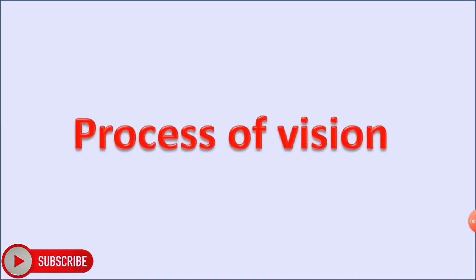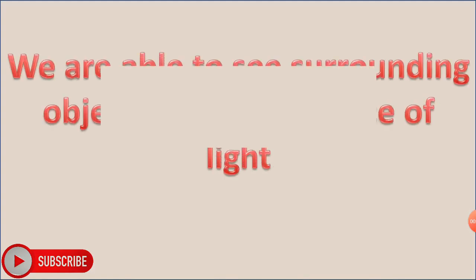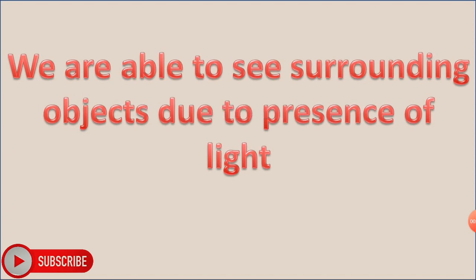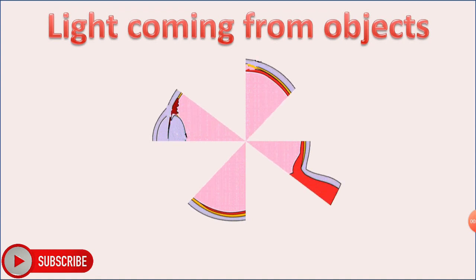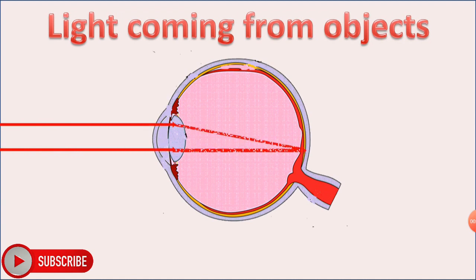Process of Vision. We are able to see surrounding objects due to the presence of light. Light coming from objects enters our eyes through the eye lens and is focused on the retina.